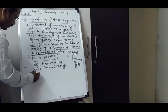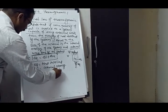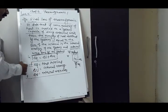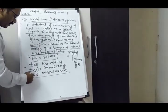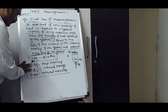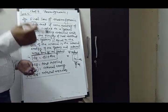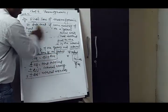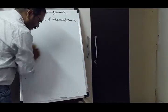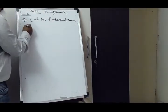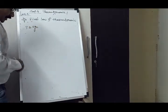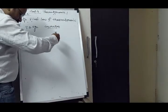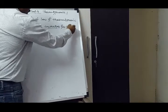ΔW is the external work done by the system. These values can be positive or negative. Internal energy can also be positive or negative. There are 5 to 6 cases. We now explain the sign convention for heat and work in the first law of thermodynamics.